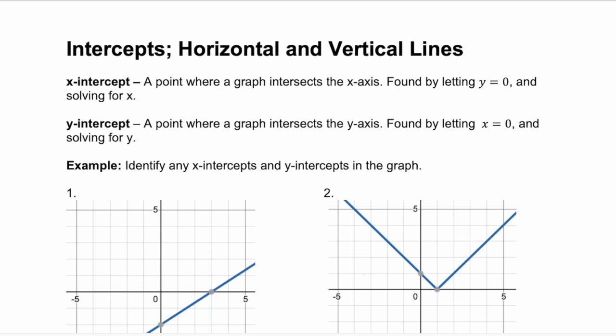So what is an intercept? We have two different types of intercepts: an x-intercept and a y-intercept. The x-intercept is a point where a graph intersects the x-axis. It's found by letting y equal zero and then solving for x, so you end up with the point of an x value and then zero.